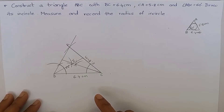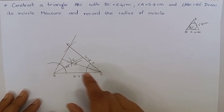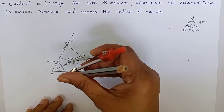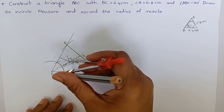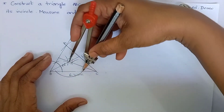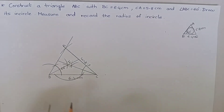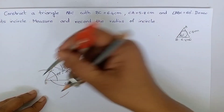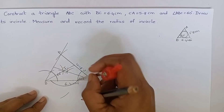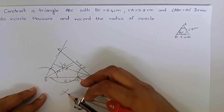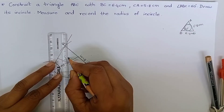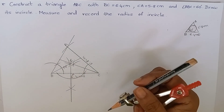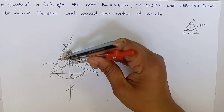Draw a perpendicular line on the side BC from point I. To do this, keep your compass at point I and cut an arc on the side BC. Keep your compass at this point and cut an arc. Keep your compass at this point and cut another arc. Join these two points and name this point as N. Keeping IN as the radius, draw a circle.